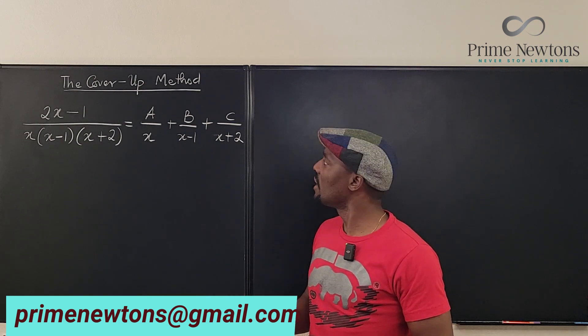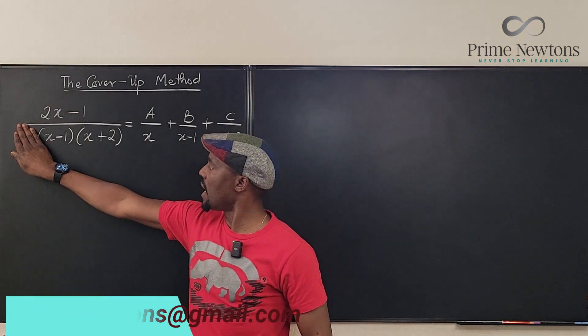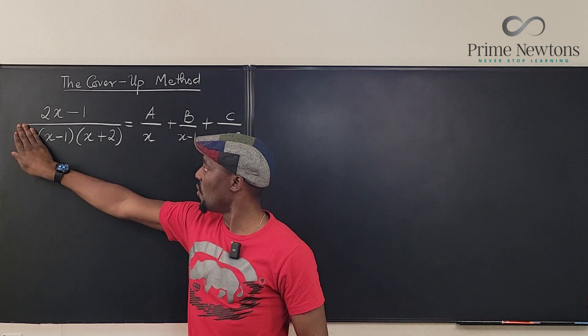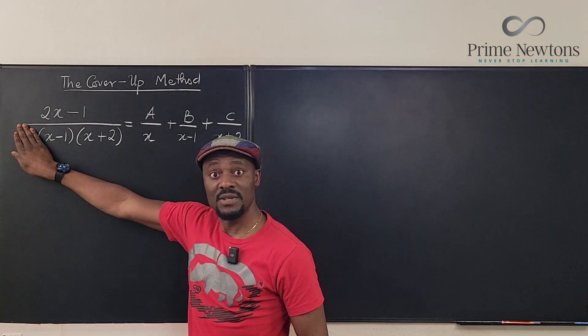And you say, how do you know what A is? I go, if I remove this guy I know my answer is gonna be negative one over negative two. It's one half.